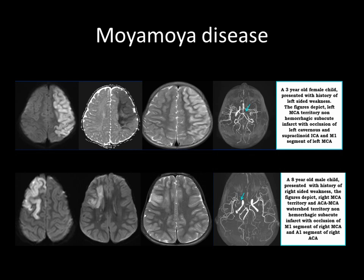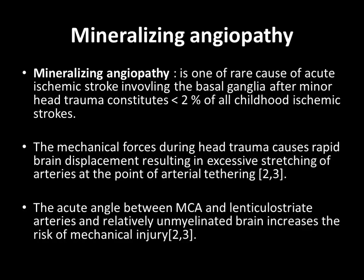Here, an eight-year-old male child who presented with a history of left MCA territory symptoms. The figures depict right MCA territory and ACA-MCA watershed territory non-hemorrhagic subacute infarct with occlusion of M1 segment of right MCA and right ACA.